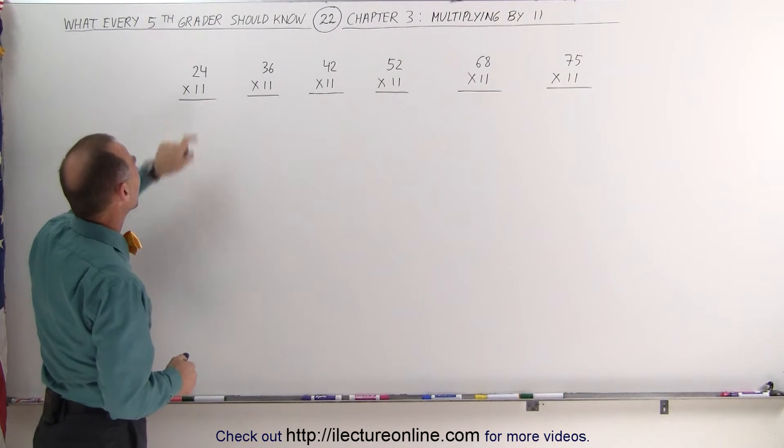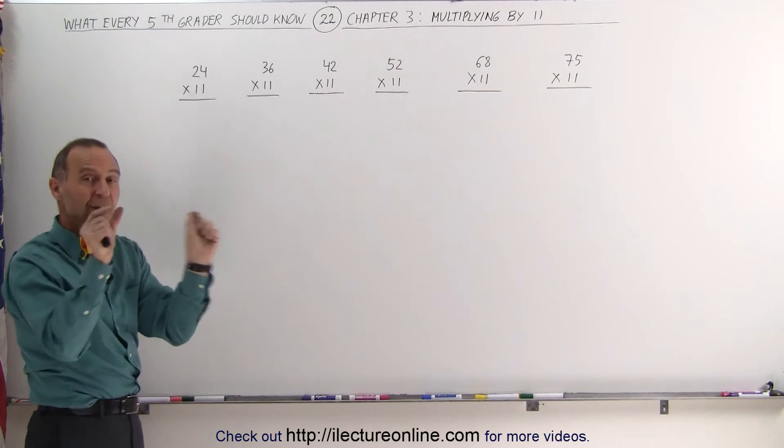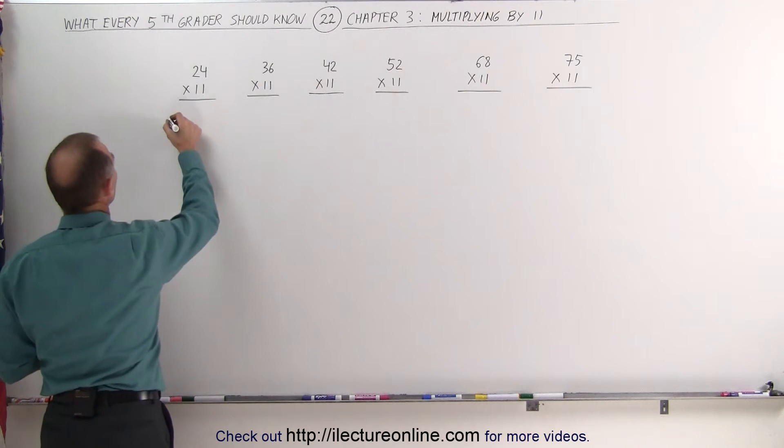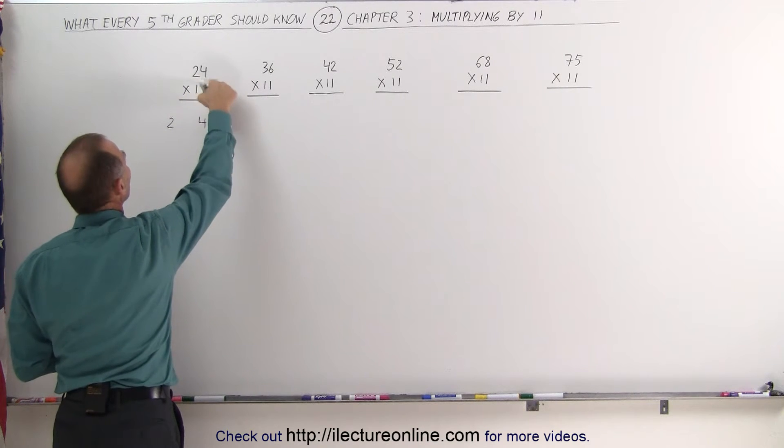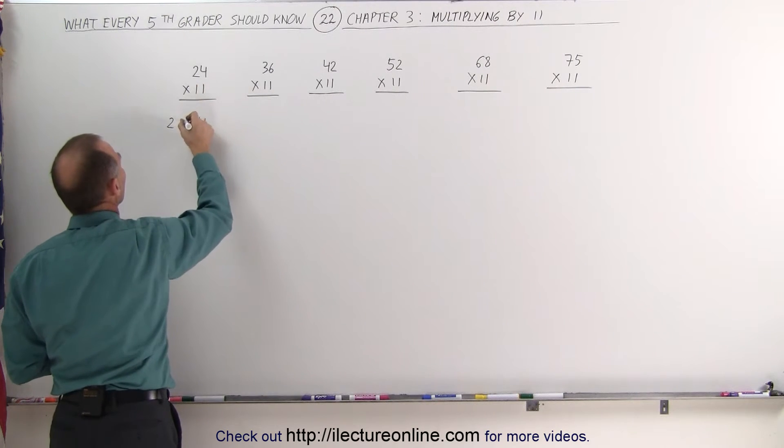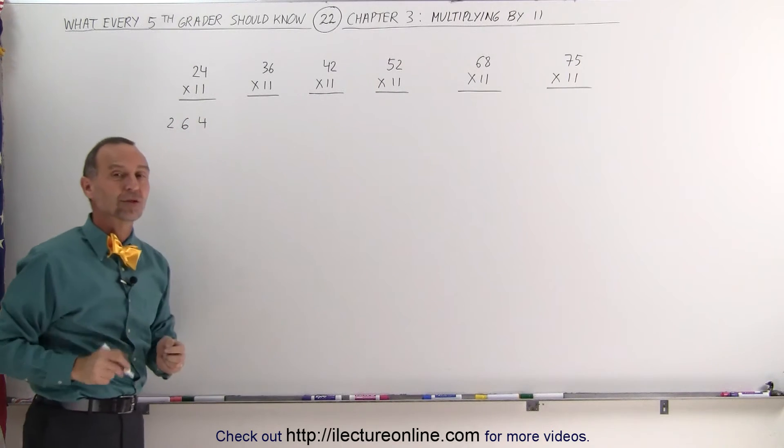Let's say we multiply 24 times 11. What you do is you take the two numbers and you separate them from one another. You write down the 2, you write down the 4, leave some room in between. Then you add the two numbers, 2 plus 4 is 6, put it in there, the answer is 264.